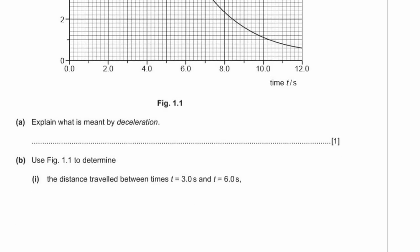The first question asks us to explain what is meant by deceleration. Deceleration means an object is slowing down — it doesn't mean it has a negative acceleration, because if it's going in a negative direction and speeding up, that wouldn't be deceleration. Deceleration always means it's slowing down.